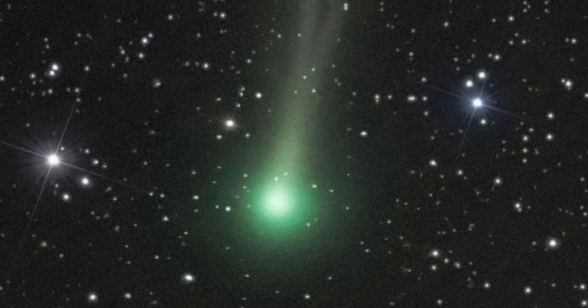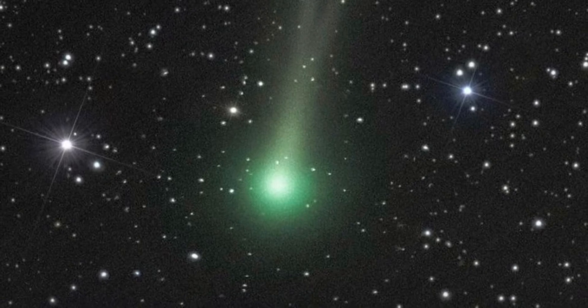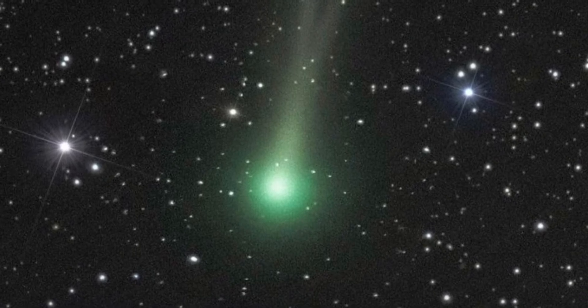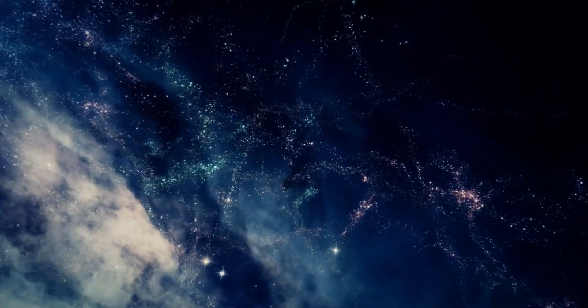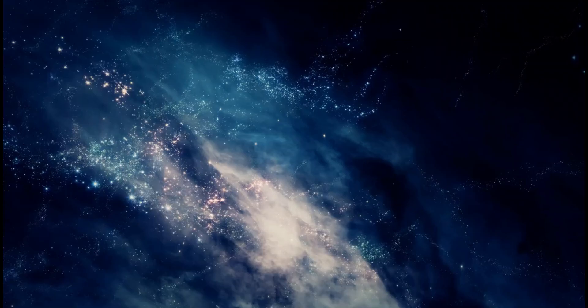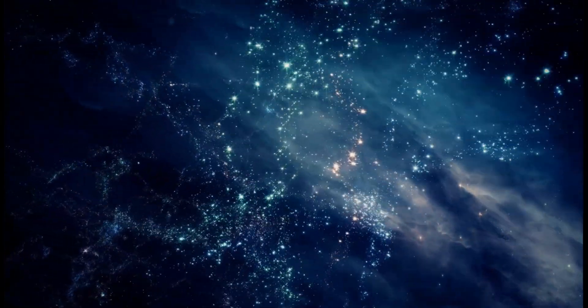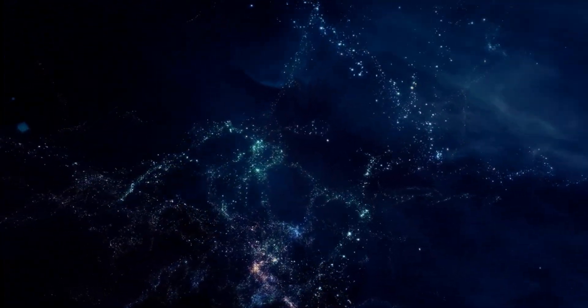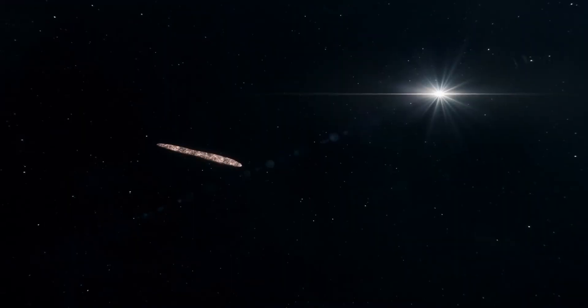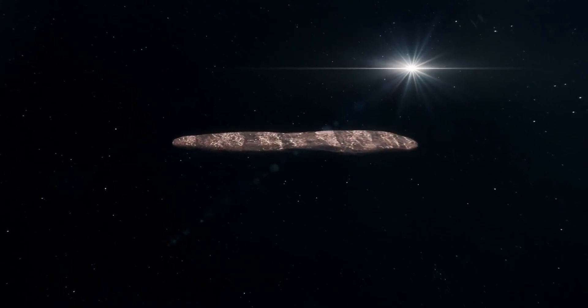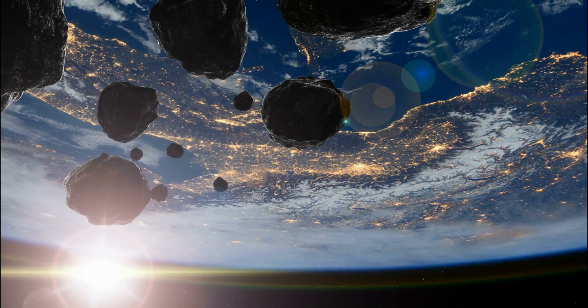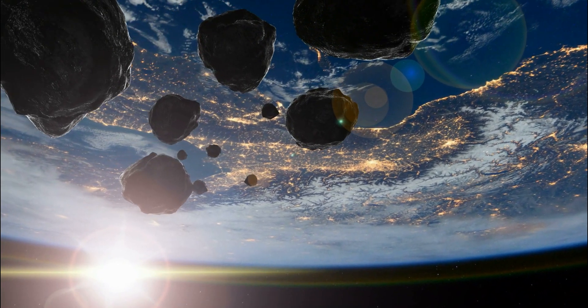Some theoretical physicists have suggested that 3i Atlas might have been subtly gravitationally guided, drawn along invisible paths sculpted by planetary and solar resonances. A few, venturing further into speculation, have even asked the unthinkable. Could such precision suggest a deliberate trajectory? Could the object, or whatever remains at its core, have been designed to move purposefully through systems like ours, guided not by chance, but by intention?